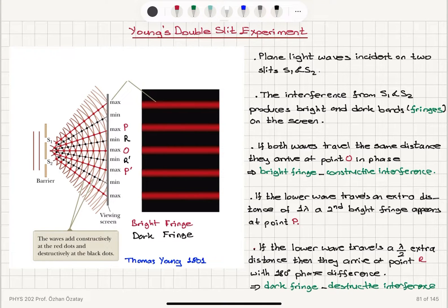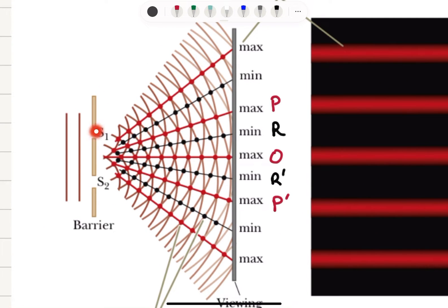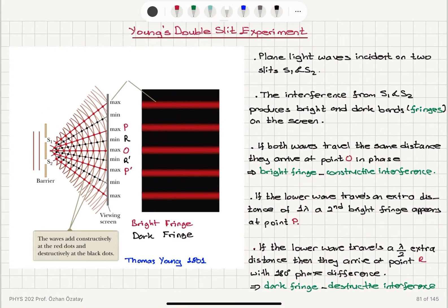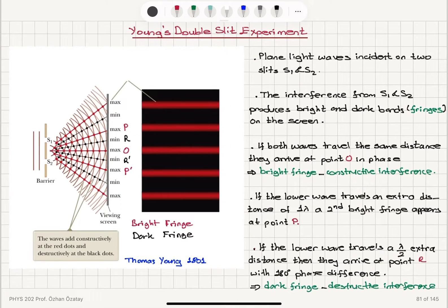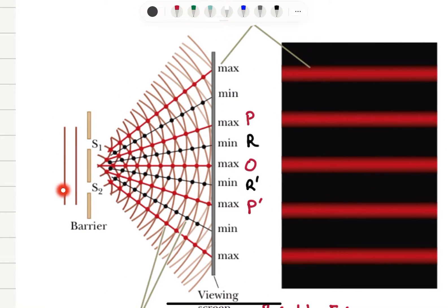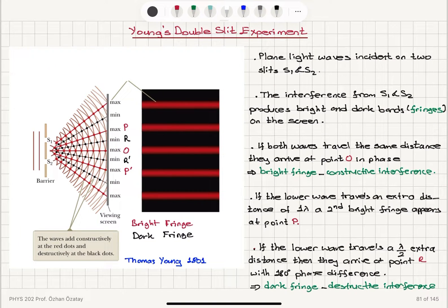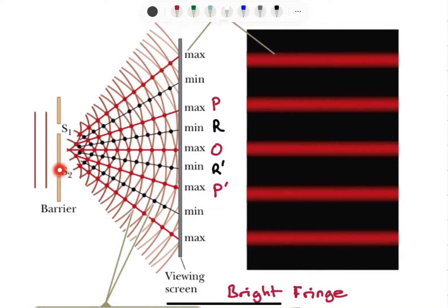Young's Double Slit Experiment. In this experiment, we have a set of two slits — two openings on this barrier here. These slits are called S1 and S2. We have plane light waves incident on the two slits, so the wave fronts are planes and will be incident on this set of two slits. These slits act as point sources of light, and S1 and S2 produce secondary waves.